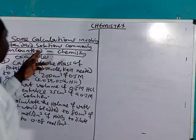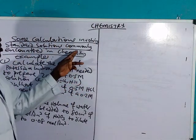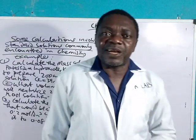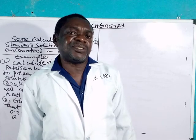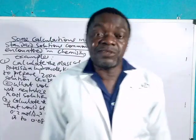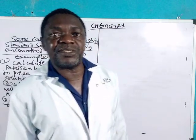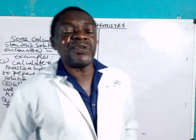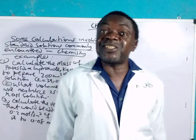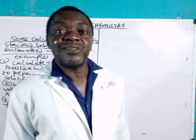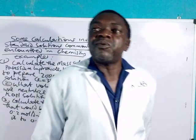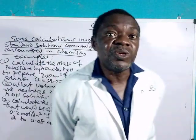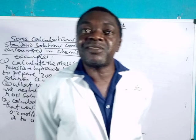In our today's talk, we are going to look at some calculations involving standard solutions commonly encountered in chemistry. But before we go into those calculations, let's have a look at some terminologies. First, a standard solution is a solution whose concentration is accurately known. A molar solution is a solution which contains one mole or the molar mass of the compound per one dm³ solution.